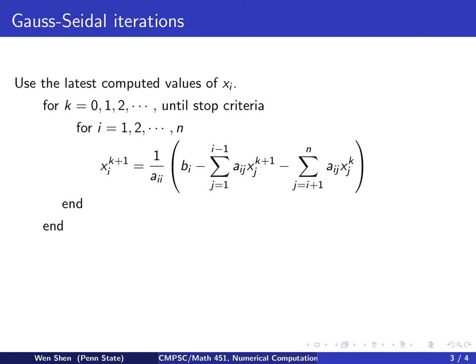Choose an initial guess, which is the same, and then we run through the iteration until stop criteria, which is the same. And then for each equation, now we go through it in a sequential way, and we have this iteration.